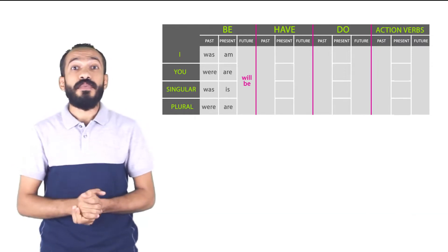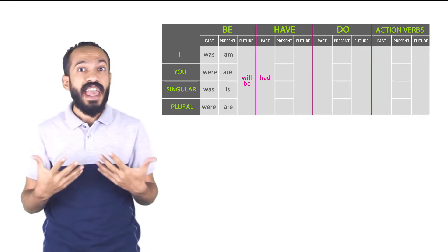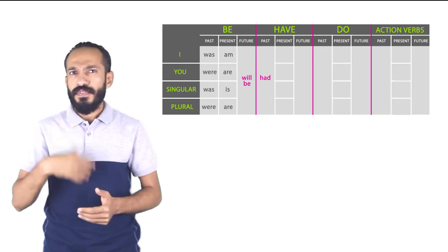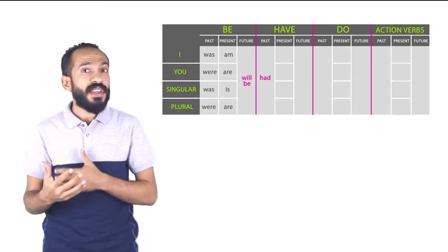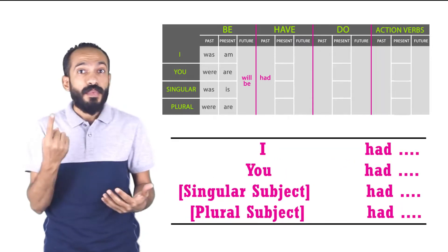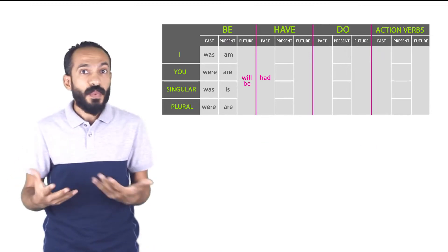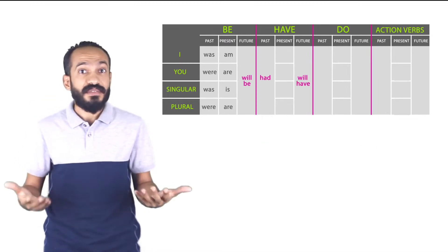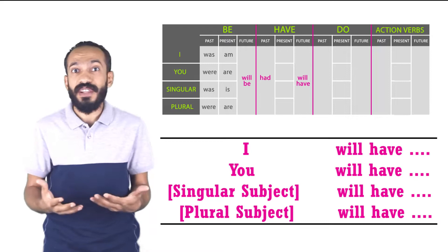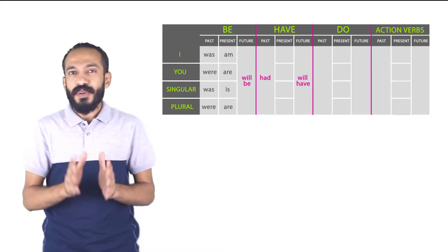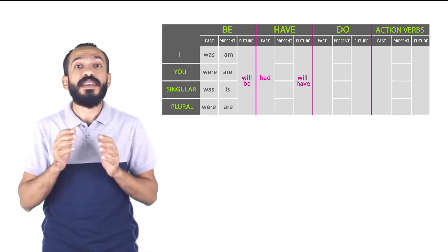Our second verb: verb to have. The good news is that in the past tense there's only one form — 'had.' In the future tense there's only one form — 'will have.' That means I can use 'had' with every subject: I had, you had, one person had, lots of people had. In the future tense, 'will have' with all the different types of subjects: I will have, you will have, the man will have, the girls will have. This part is really easy.